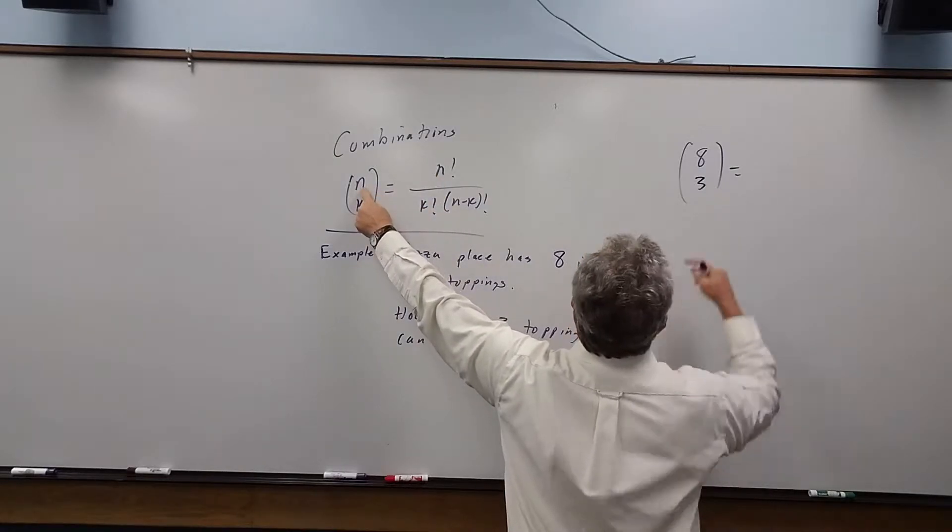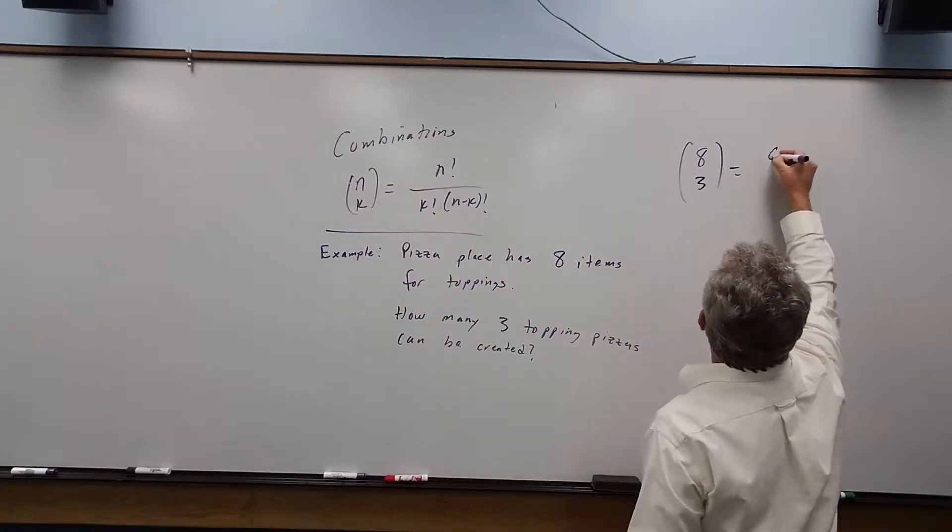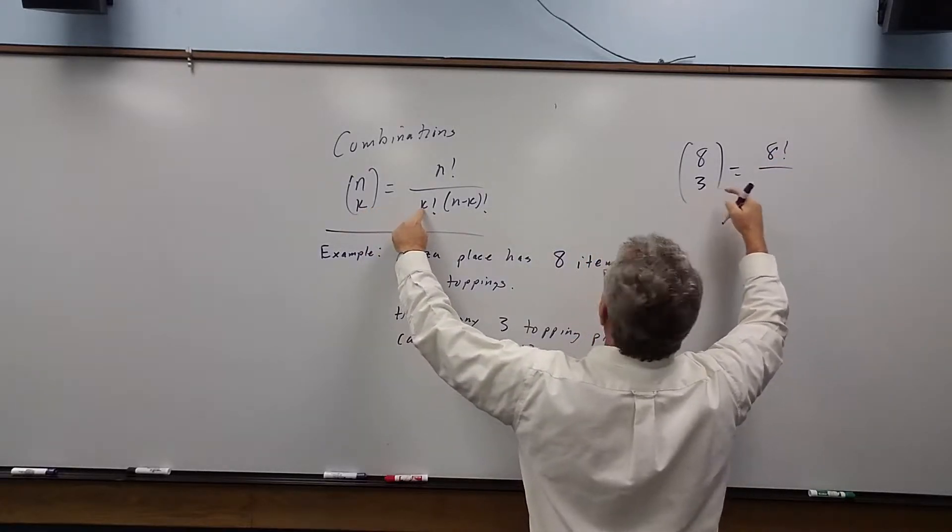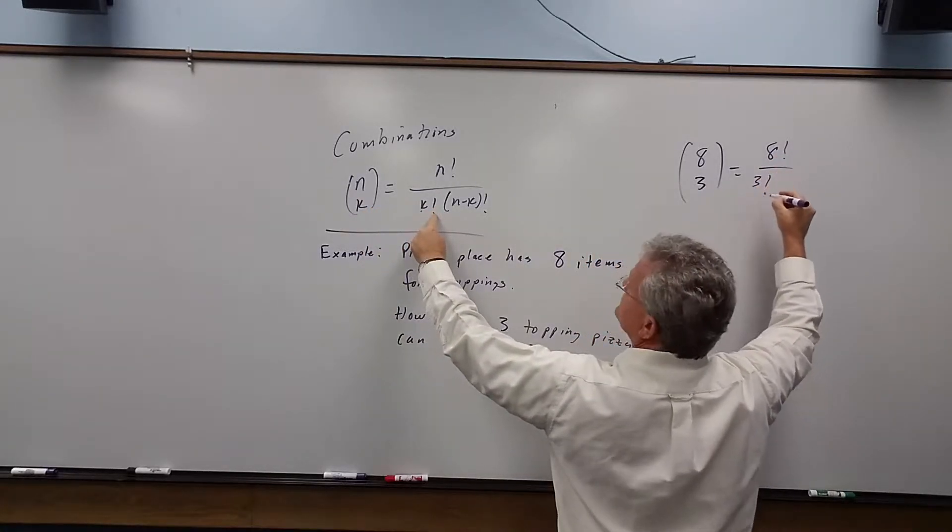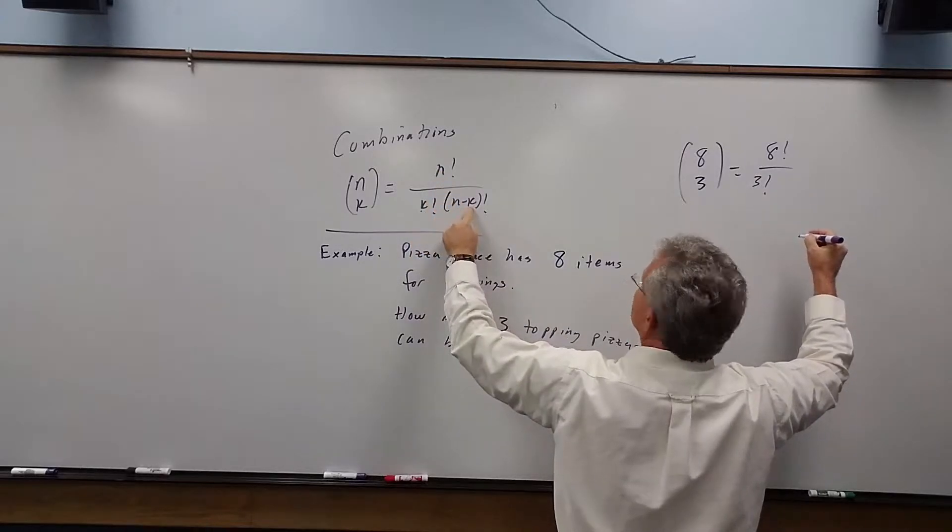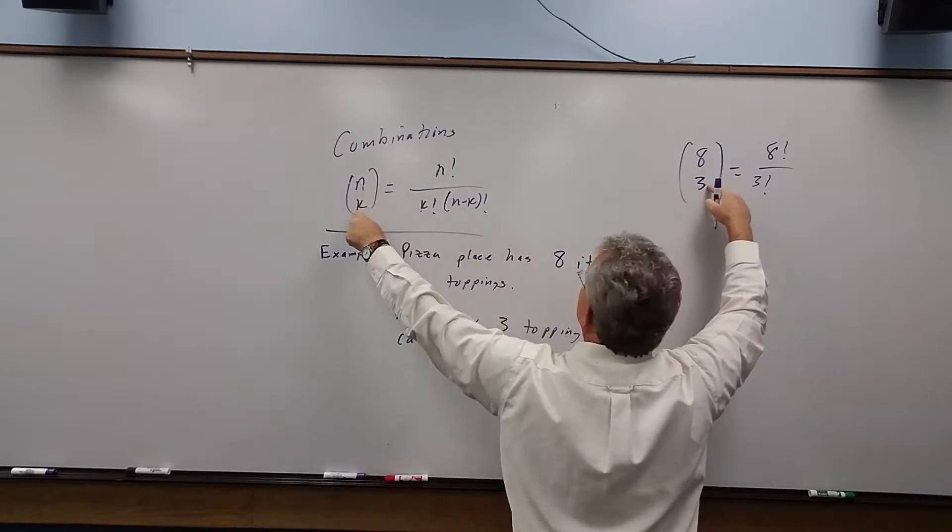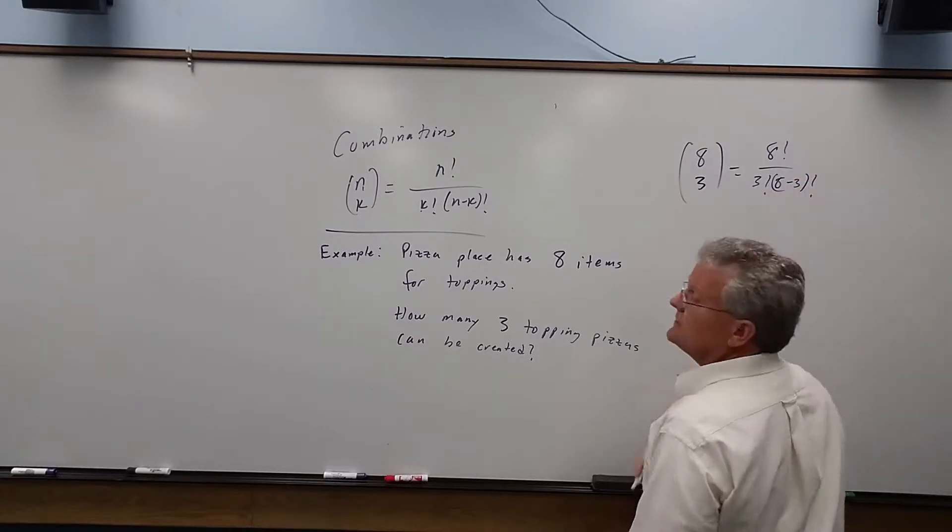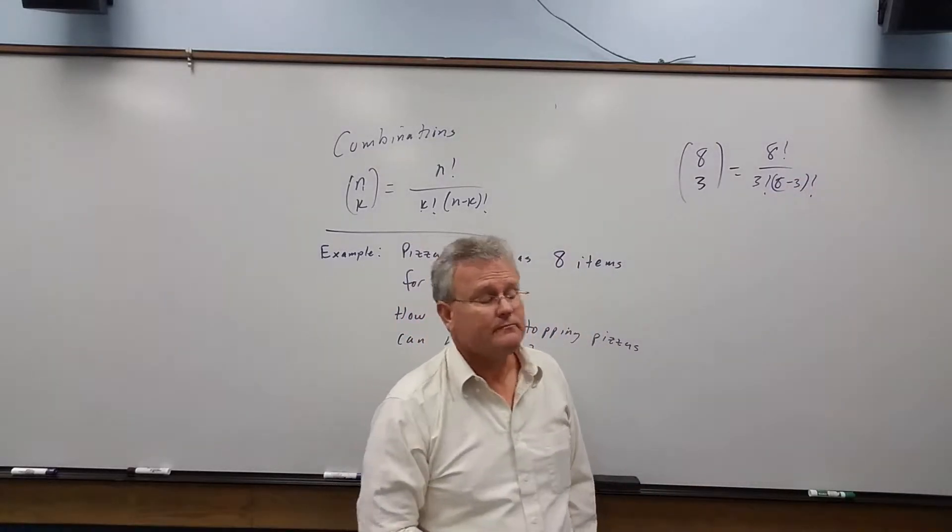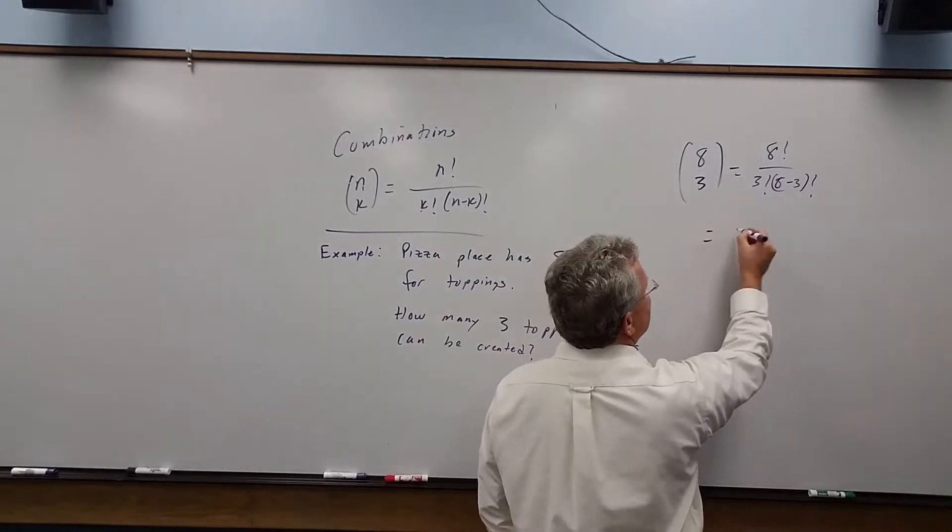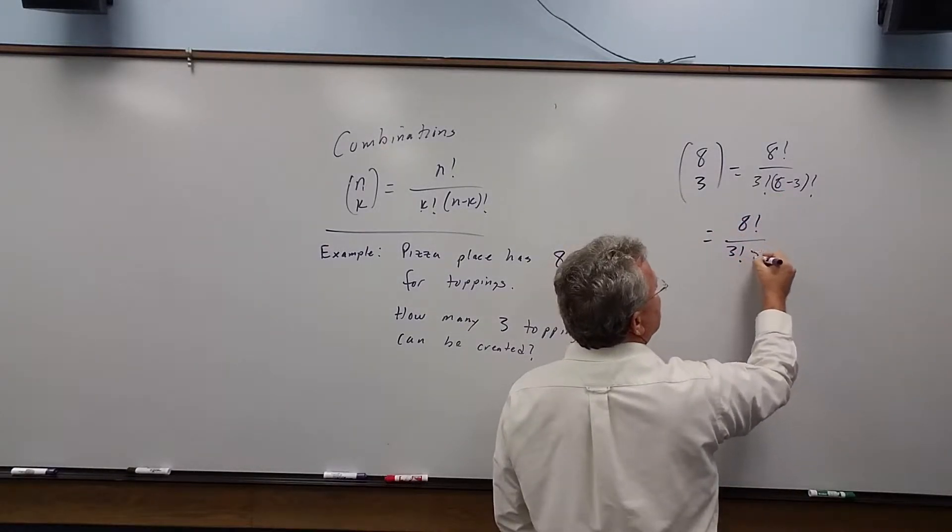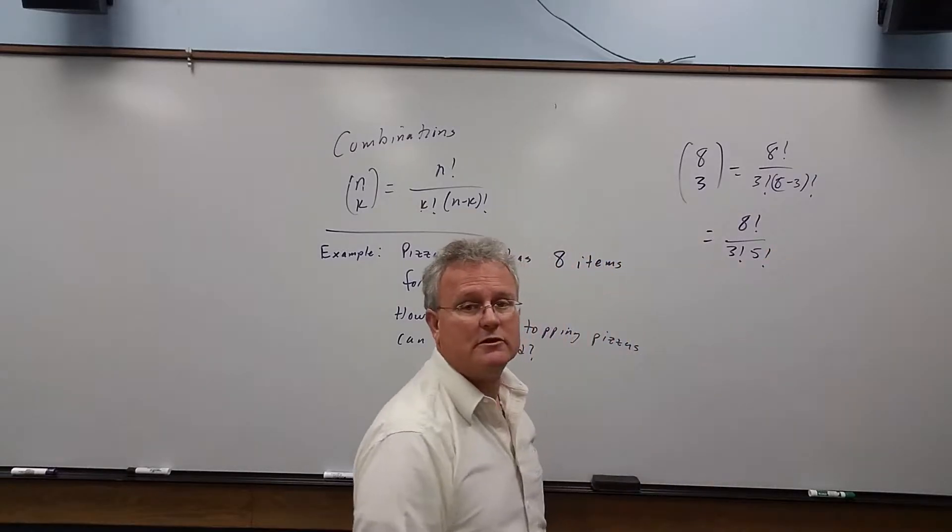The top number is eight, so we have eight factorial. The bottom number is k, so we have three factorial. And then we have n minus k, eight minus three, and that quantity we take the factorial. Now we just simplify. Eight factorial, eight minus three is five factorial.